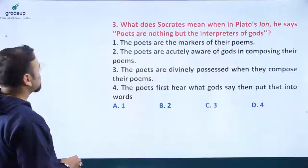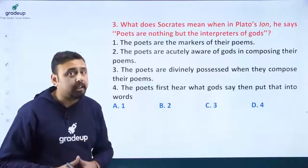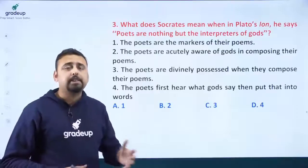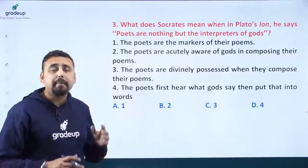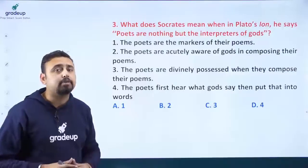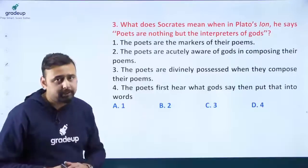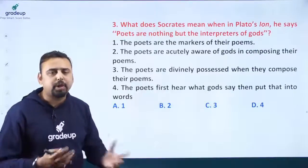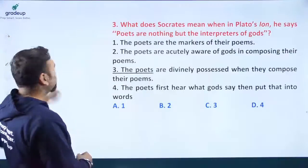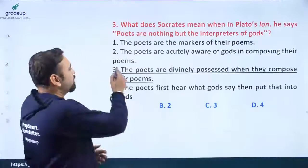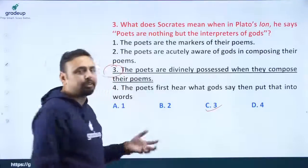Question number three: what does Socrates mean in Plato's Ion when he says 'poets are nothing but the interpreters of God'? Options: the poets are the makers of their poems; the poets are actually aware of God in composing their poems; the poets are divinely possessed when they compose their poems; or the poets first hear what God says and then put that into words. The answer is: the poets are divinely possessed when they compose their poems.